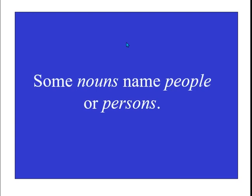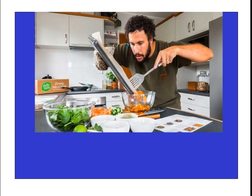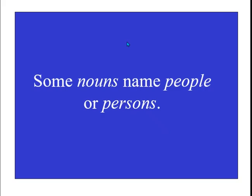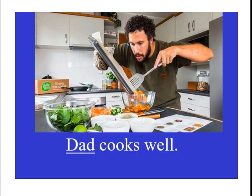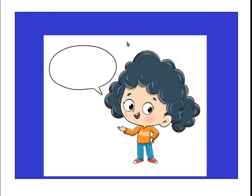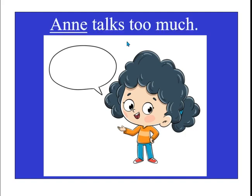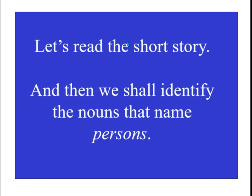Now, some nouns name people or persons, and some nouns also name places. Look at this: 'Dad cooks well.' Dad is the person here. And 'talks too much' — so 'Dad' is the noun that shows a person.